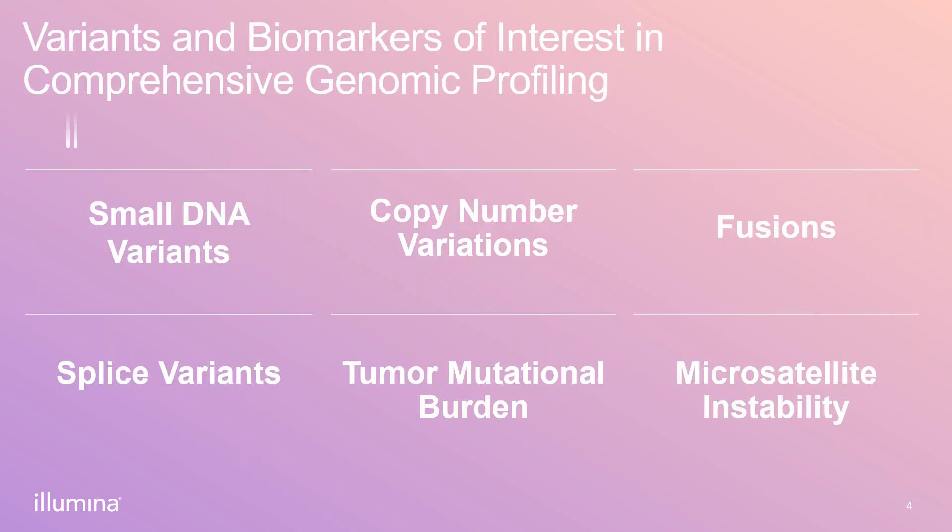There are different variants and biomarkers that can be targeted with a comprehensive genomic panel. Small variants are the most commonly investigated and include single nucleotide polymorphisms, or SNPs, along with insertions and deletions, also known as indels. Copy number variations, or CNVs, are another common variant investigated in somatic panels. RNA fusions, for example NTRK fusions, and RNA splice variants are other variant classes commonly investigated.